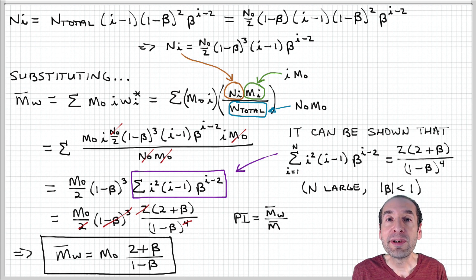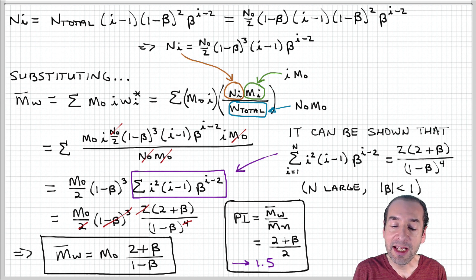We can also calculate the polydispersity index now because it's the ratio of the weight average to the number average molecular weight, and we find that this is equal to 2 plus beta over 2.